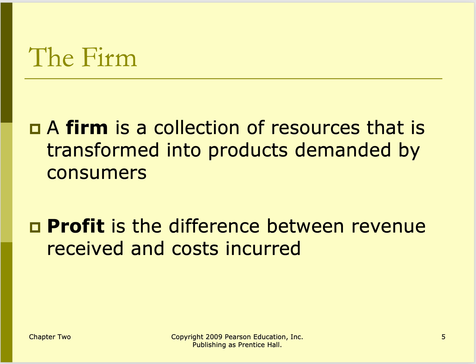A firm is a collection of various resources that a collection of people transforms into products and services demanded by consumers, of which consumers are then willing to pay. Profit is the difference between the revenue received — what people pay for those products and services — and what it costs to provide them. Obviously, if the profit is positive, that's the desire of most firms.